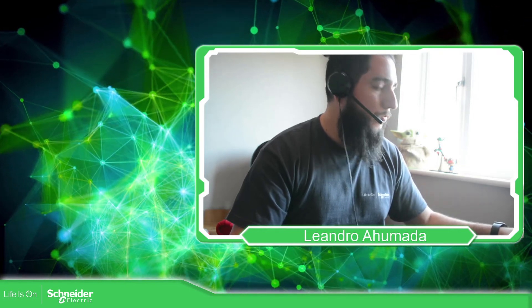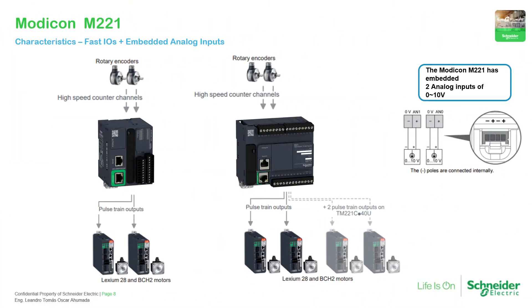With the Modicon M221 we have fast inputs usable with encoders or high-speed measurement up to 100 kHz, and we can use the PTO of the PLC with servo drives. Depending on the controller, you can use two or up to four outputs with the PTO.